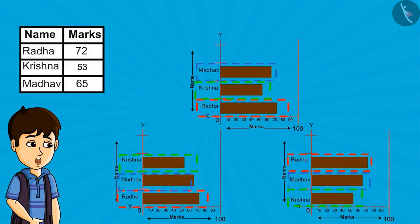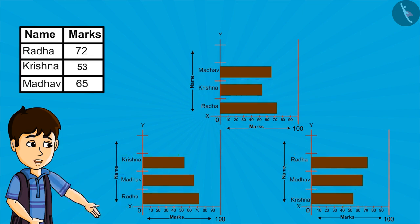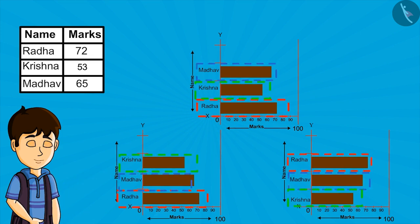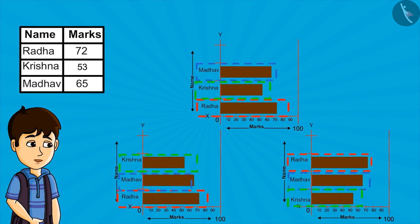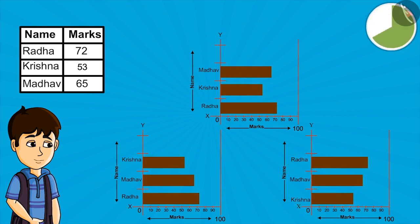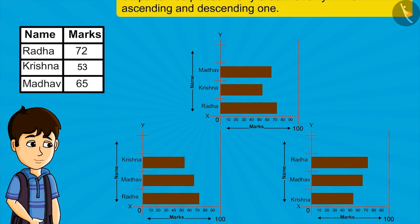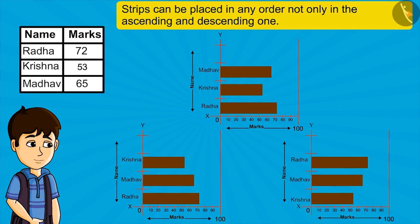Look at these three charts carefully — you can pause the video and closely look at them. You can rightly interpret data from all three charts. So we can say strips can be placed in any order, not only in ascending and descending order.